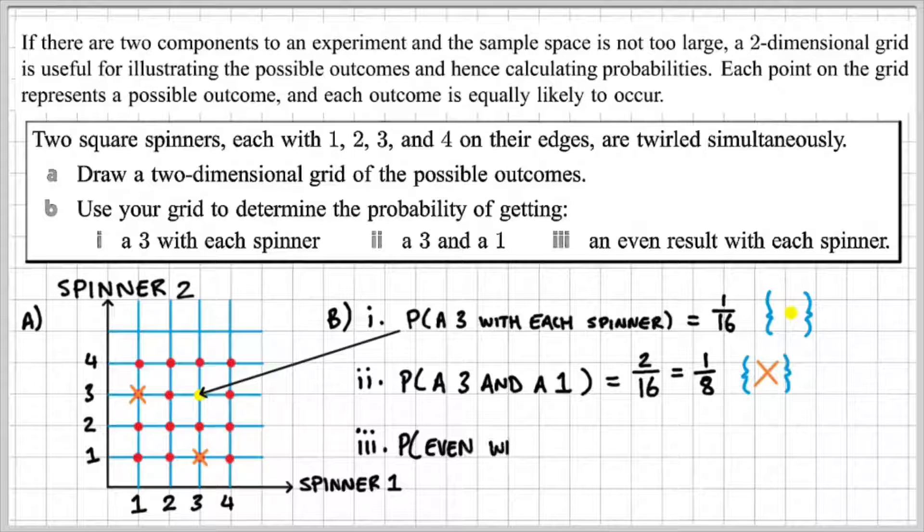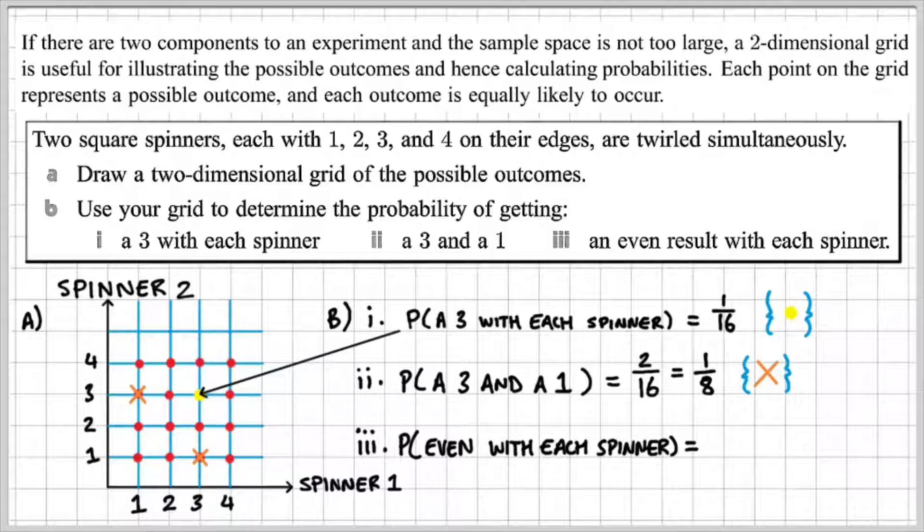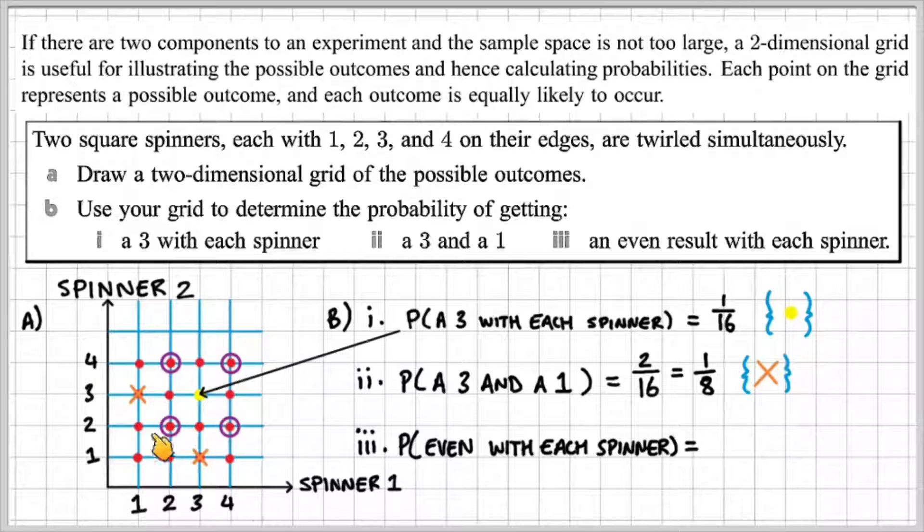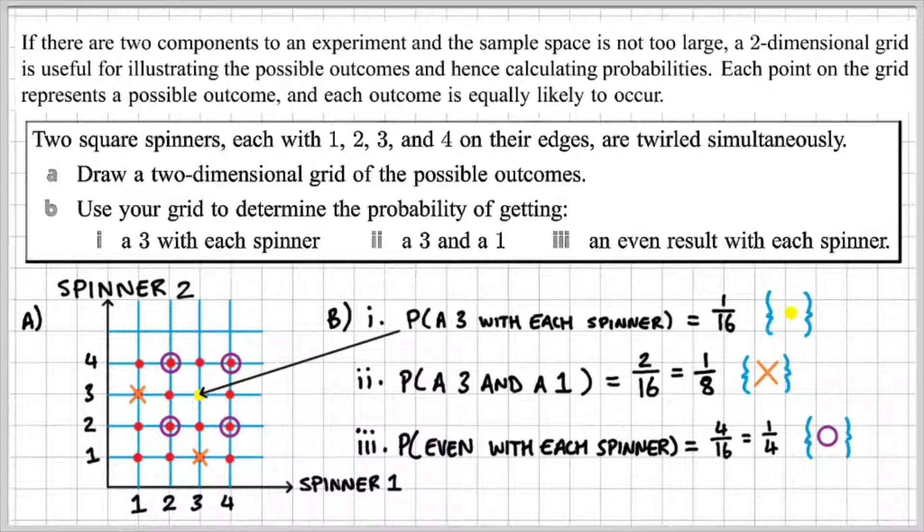Part iii) is the probability of getting an even number with each spinner. So we can use our two-dimensional grid and we can see a 2 and a 2, a 2 and a 4, a 4 and a 2, and a 4 and a 4 are the favorable outcomes. So that's going to be 4 over 16 or 1 over 4, indicated by my purple circle on my two-dimensional grid.